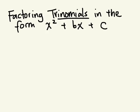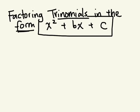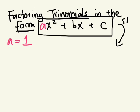The second type of factoring you're going to learn today is factoring a trinomial — an expression with three terms written in standard form. We're factoring in the form when A is equal to 1; that's why there's no number out front. So we're going from standard form and putting this in factored form.